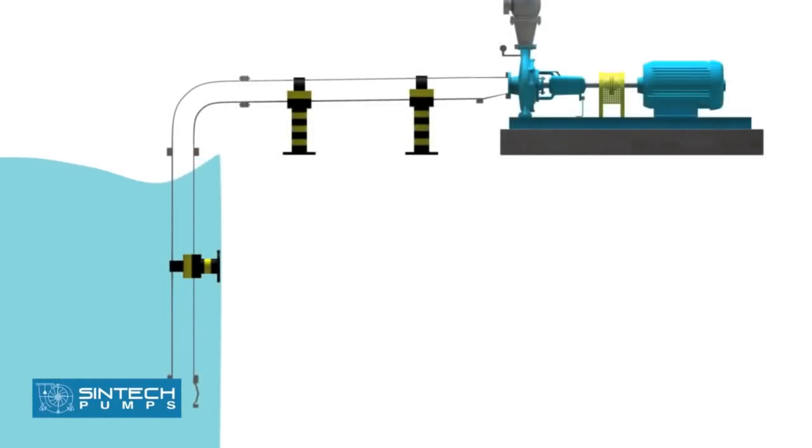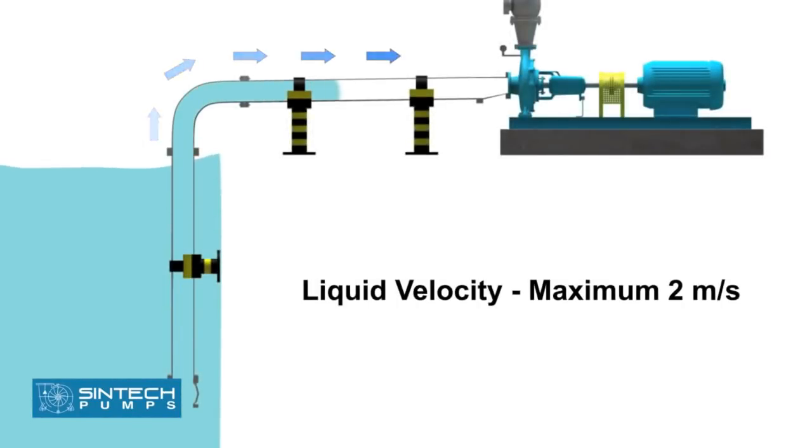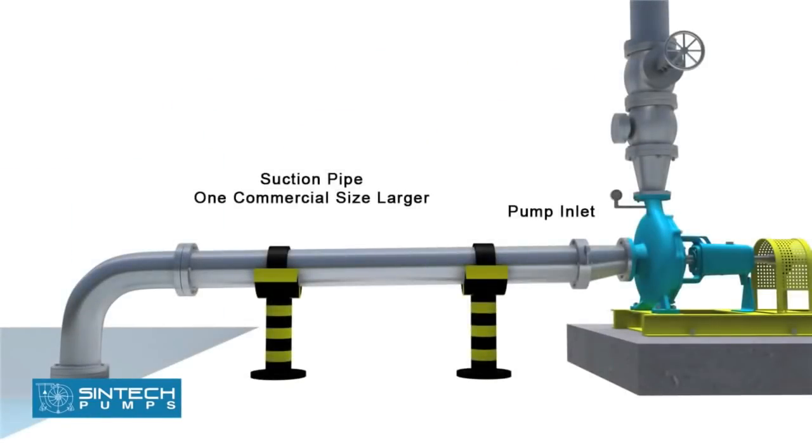The suction pipe should be sized to ensure the liquid velocity of not more than two meters per second. The suction pipe size should be at least one commercial size larger than the opening of the pump inlet.